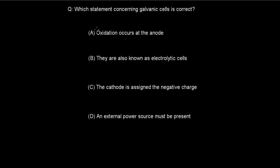The correct answer was A — oxidation occurs at the anode — because whatever is at the anode will always lose electrons. B was incorrect because it's not called the electrolytic cell; it's called the electrochemical cell. C is incorrect: the cathode is assigned the positive charge, not the negative charge. D is incorrect because an external power source is not required — if everything is present at the anode and cathode, it will proceed by itself.